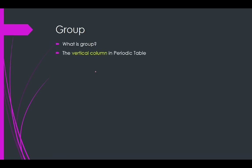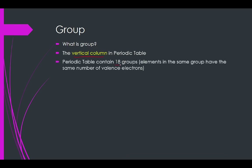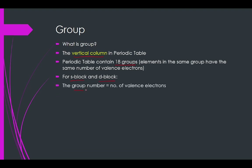So what is a group? Group is the vertical column, and there are 18 groups. For S block and D block, you can determine the group from the electronic configuration because the group number is equal to the number of valence electrons. For P block, the difference is that you take the number of electrons at the outermost shell and add 10.